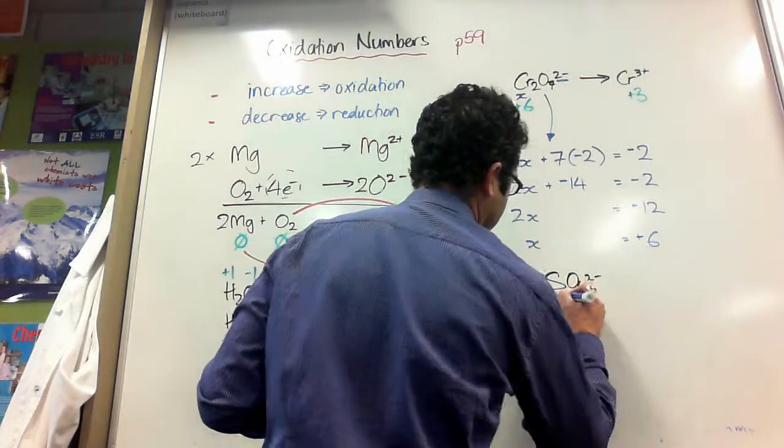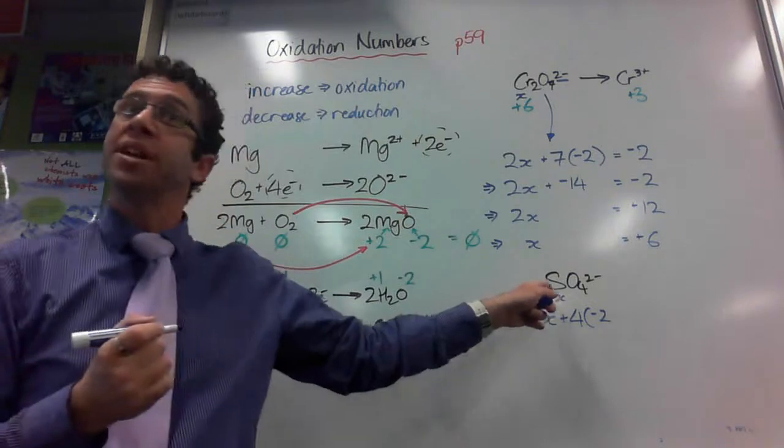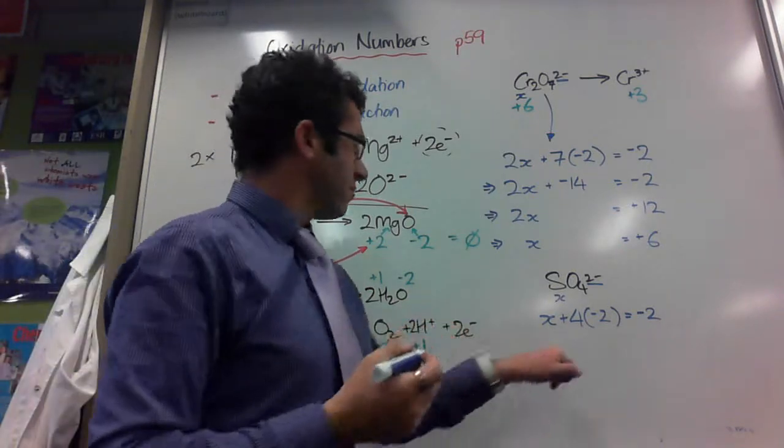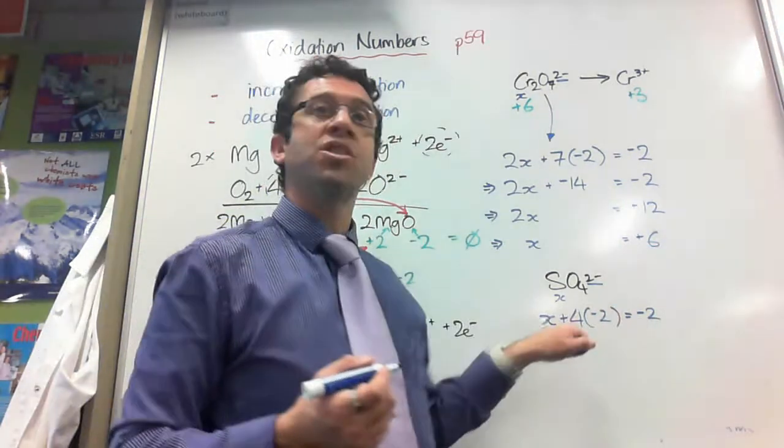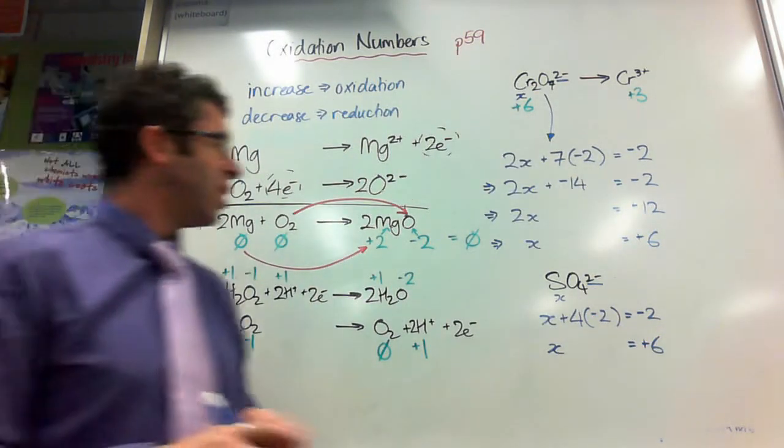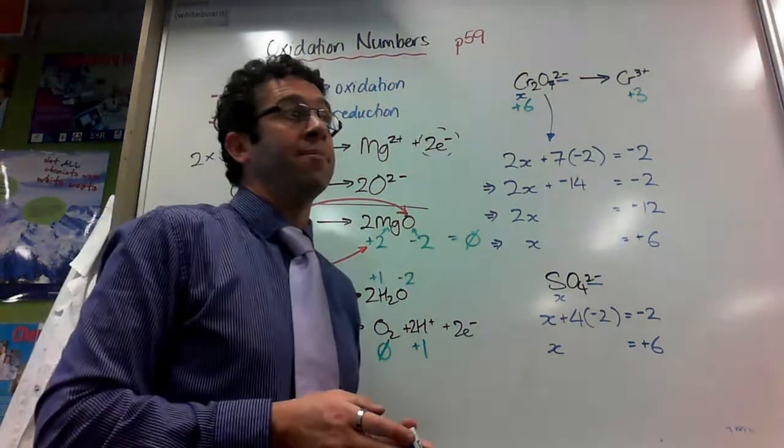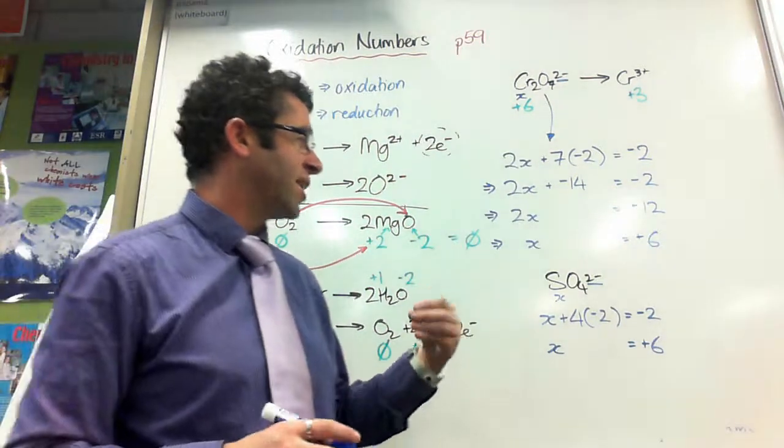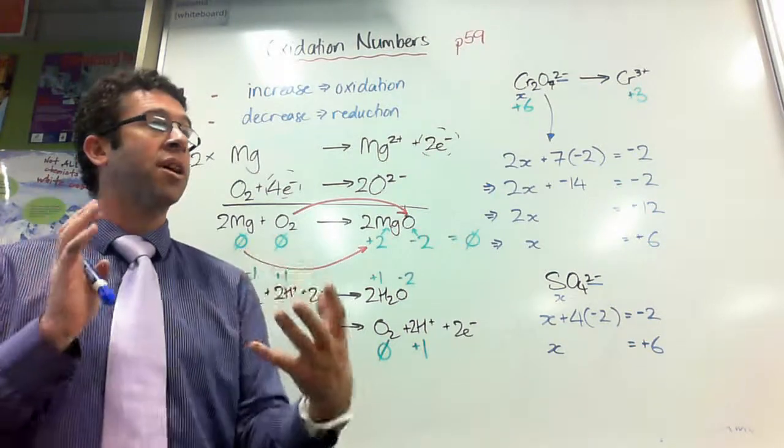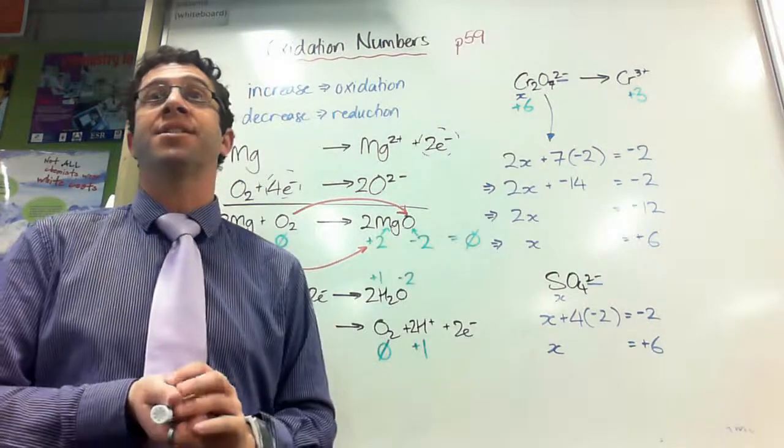So, sulfur is my unknown. So, I'll call it x. So, I've got x plus 4 times negative 2 because oxygen is always negative 2 equals negative 2 because that's the charge of the ion. When I solve that, 4 times negative 2 is negative 8. I add 8 to each side. Again, x is actually going to be positive 6 in this case. Now, sulfur is quite a useful element for assigning oxidation numbers and one you should expect to see in assessments and in practice tasks because it can have oxidation numbers 0, plus 4, plus 6, negative 2. It's got variable oxidation numbers. So, it's a really useful one for assessment and for practicing. So, expect to see that one a lot.